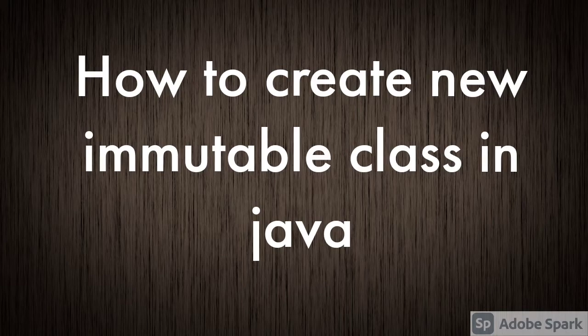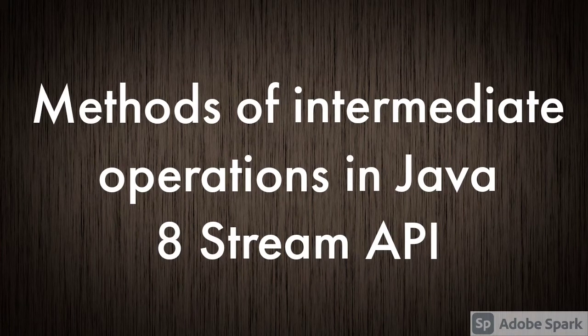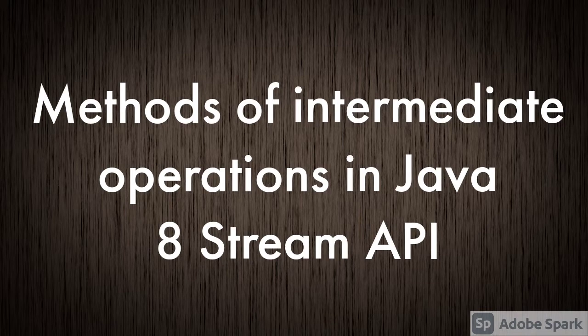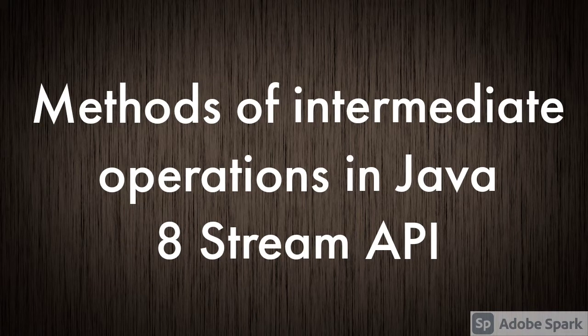The next question was about intermediate operations in Java 8 Stream API. Java 8 Stream API was introduced in Java 8 and has different types of operations: intermediate, terminal, and so on. Intermediate operations include sorted, distinct, peek, and others. These methods get used before we terminate the stream execution. Go through a stream tutorial if you need more knowledge — there are lots of methods and you can name any four or five.